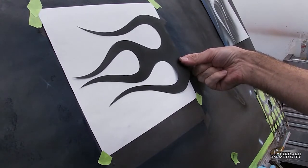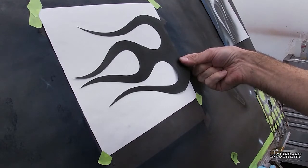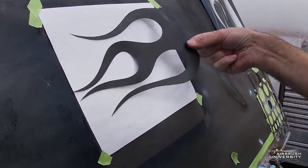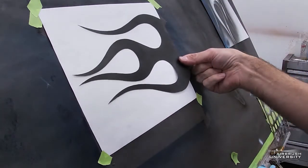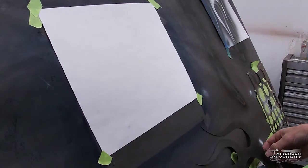So cut that out with your exacto knife as carefully as you can and it should look basically like this when you're done. Cut that out and then come back here to the video and I'll show you how to continue.